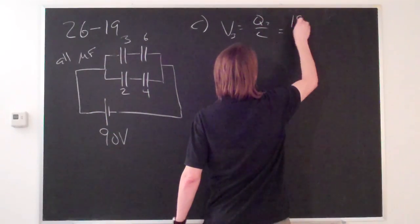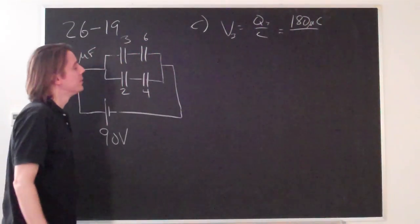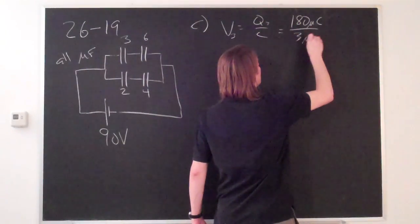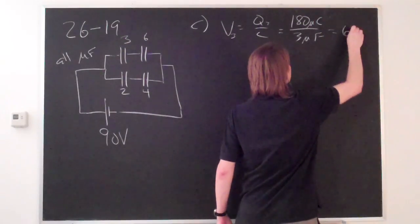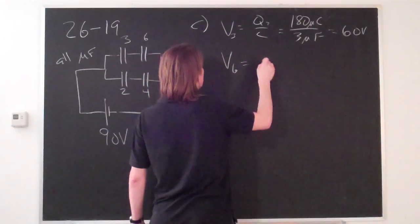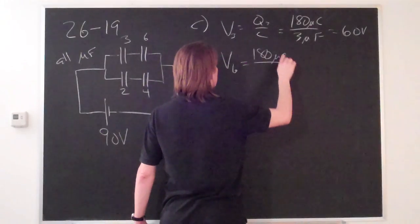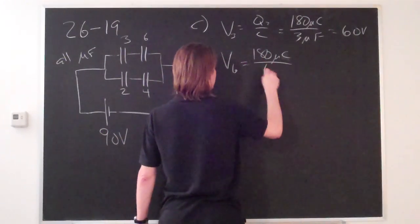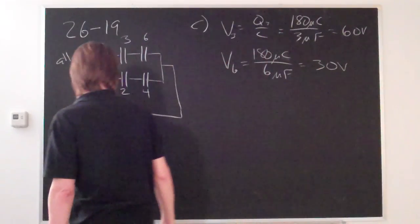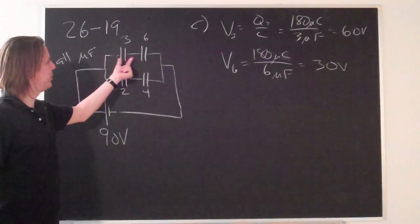For the 3 microfarad one, V_3 equals Q_3, which was 180 microcoulombs, and it's 3 microfarads. The micros cancel, that's 60 volts. V of the 6 was also 180 microcoulombs, and the capacitance is 6 microfarads, so 30 volts. You can stop and check your work and make sure you dropped 60 volts here, 30 volts here, for a total drop of 90 volts.